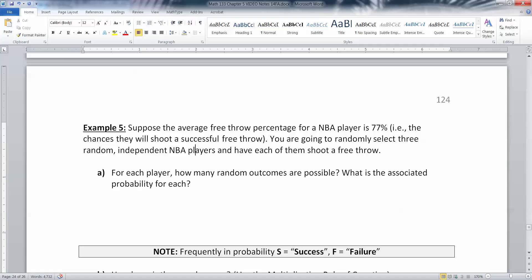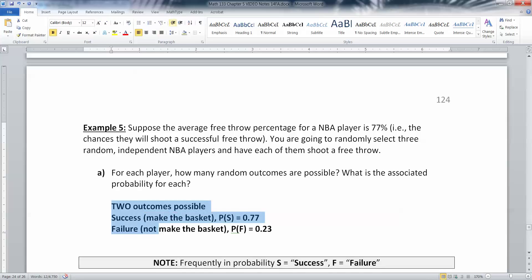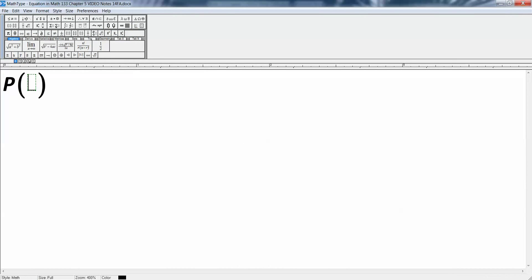So for each player, how many random outcomes are possible? Well, that would be two, right? So they either succeed or they fail. And then what are the probabilities of each one? Well, it says the chances of them being successful is 0.77. So that would be the chances of success, and then the chances of failure would be the complement of that. Probability of failure is 1 minus the probability of success, which is 1 minus 0.77, which is 0.23.